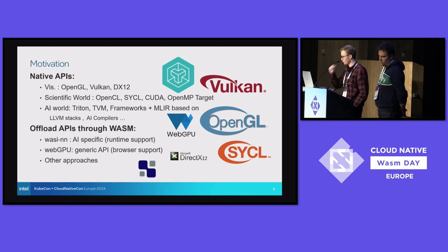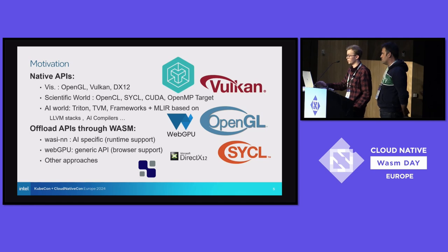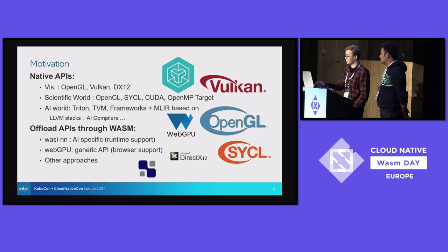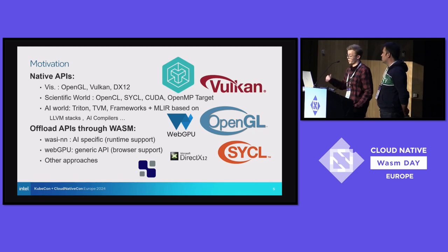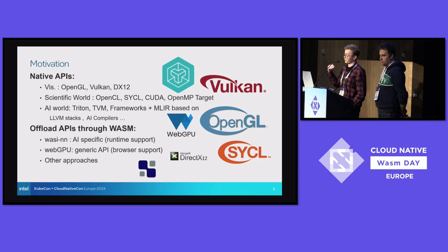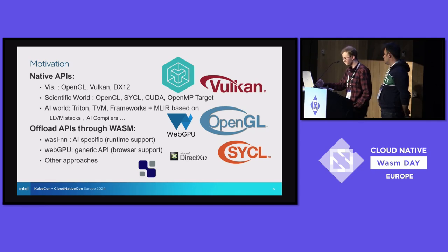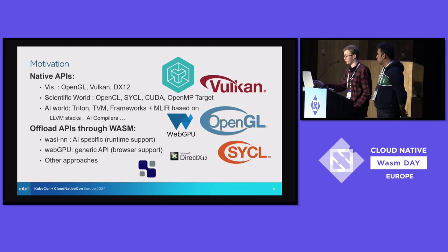There are quite a lot of native APIs already for regular GPU offload. For visual libraries, you have things like OpenGL, Vulkan, DirectX 12. In the scientific world, there's OpenCL, SYCL, CUDA, OpenMP with its target pragma. And in AI, you have things like Triton, TVM, and AI compilers. The idea would be that it could be possible to implement Wasm support in all of these, though it requires a lot of work. We actually had some success with OpenMP just getting SIMD instructions working, but even then, that was quite a lot of work.